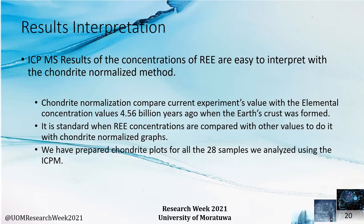This raw data cannot be easily interpreted by the general public, so we need to convert it into values that are more recognizable. The standard method in rare earth element research is chondrite normalization. In this method, we normalize the values using the rare earth element concentrations available in the earth's crust 4.56 billion years ago when the earth's crust was formed.